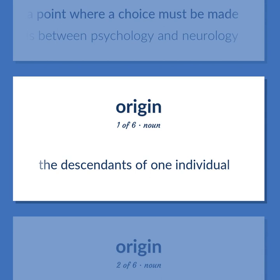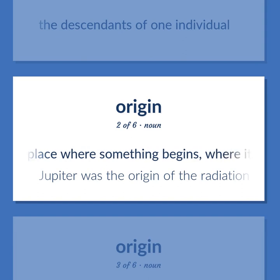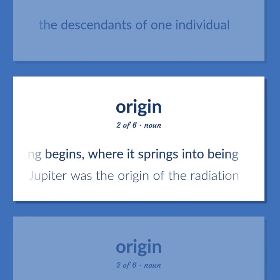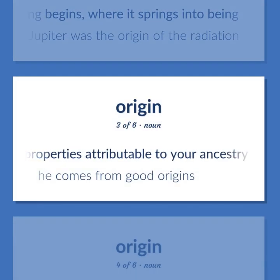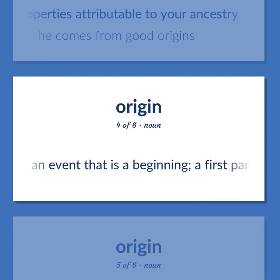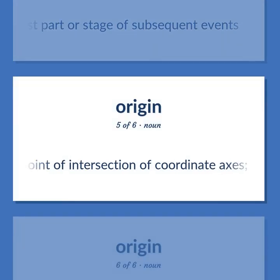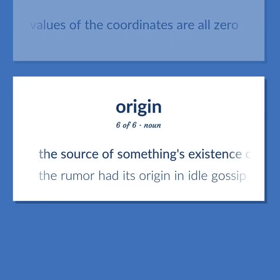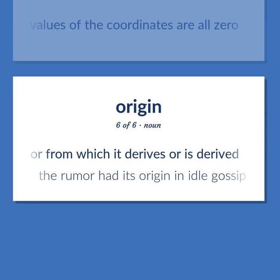Origin. The descendants of one individual. The place where something begins, where it springs into being. Jupiter was the origin of the radiation. Properties attributable to your ancestry. He comes from good origins. An event that is a beginning; a first part or stage of subsequent events. The point of intersection of coordinate axes, where the values of the coordinates are all zero. The source of something's existence or from which it derives or is derived. The rumor had its origin in idle gossip.